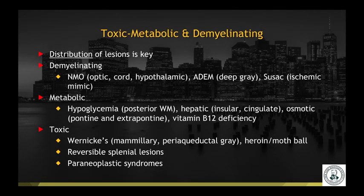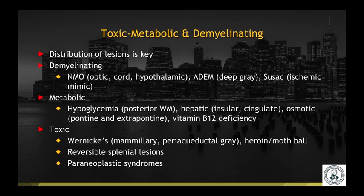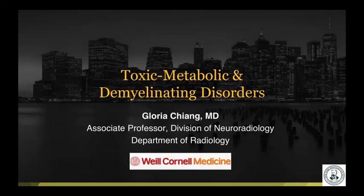In conclusion, this is a very big topic — toxic metabolic disorders as well as demyelinating disorders — but distribution often helps you come to the right diagnosis. In the case of demyelinating disease, remember NMO spectrum disorders, the antibodies against aquaporin-4 as well as MOG, and also the demyelinating disease mimic Susac syndrome. With metabolic disorders, oftentimes the history or labs, in addition to the distribution of imaging findings, point you in the right direction. With toxic disorders, history is also often very helpful. Remember that reversible splenial lesions can occur with a whole host of clinical entities and are not specific. Also remember paraneoplastic syndromes. Thank you very much for your time.